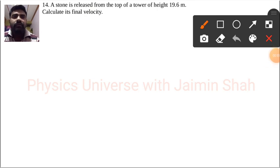Now question is: a stone is released from the top of a tower of height 19.6 meter. Calculate its final velocity.